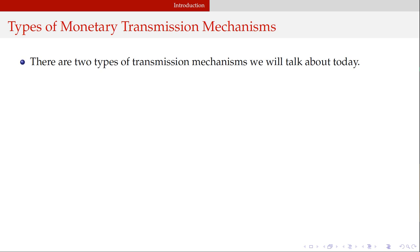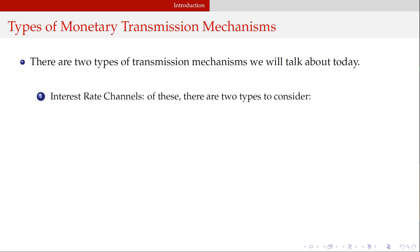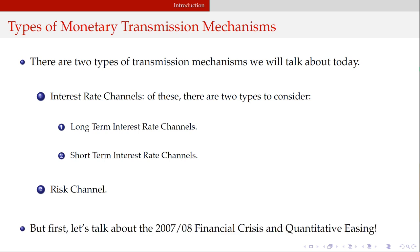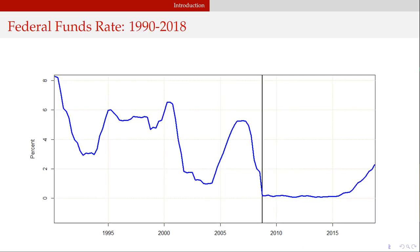The transmission mechanism is how this policy affects output, unemployment, investment, etc. There are two types we'll cover in this lecture and a third in the next. There are interest rate channels — long-term and short-term rate channels — and then there's the risk channel, which is a bit different.